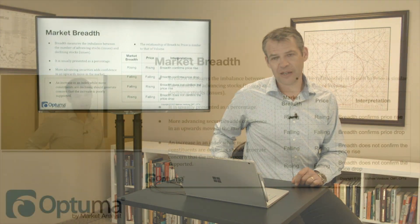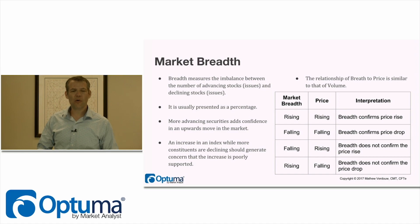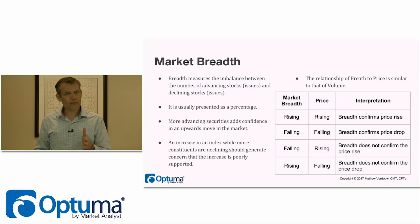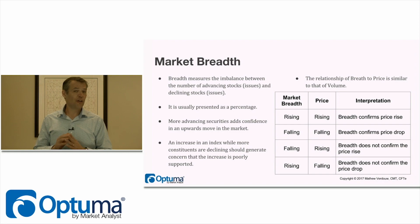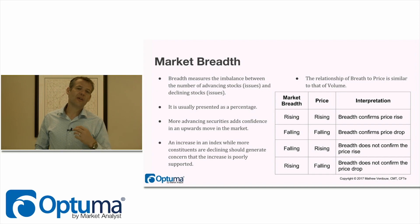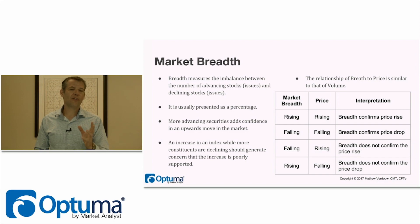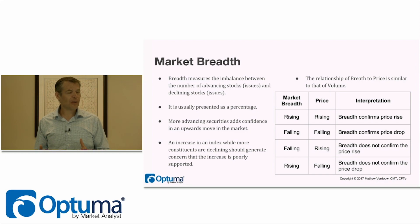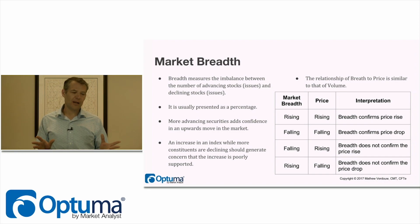Let's jump in and have a look at market breadth. The simplest form is the advance-decline, which we'll talk about in a couple of slides. Essentially, every day we take all of the stocks in the NYSE and say how many of those stocks closed higher than they were yesterday — we count those as our advances. Then we take how many closed lower — those are our decliners — and subtract decliners from advances to get our simple breadth measure.